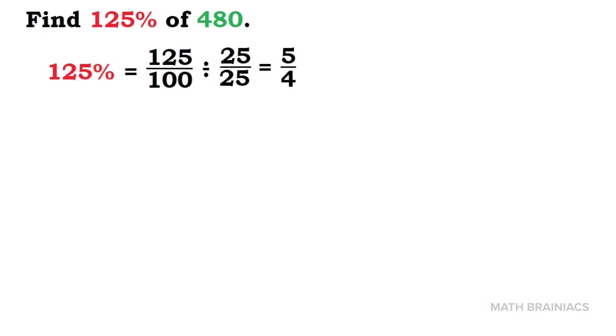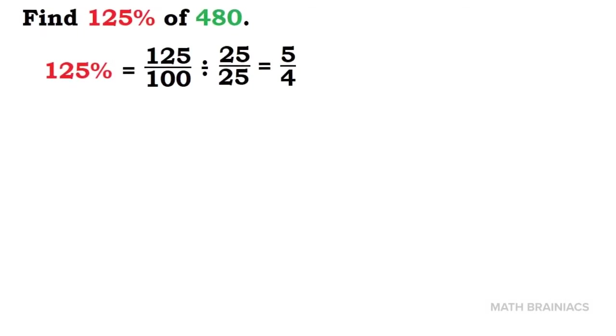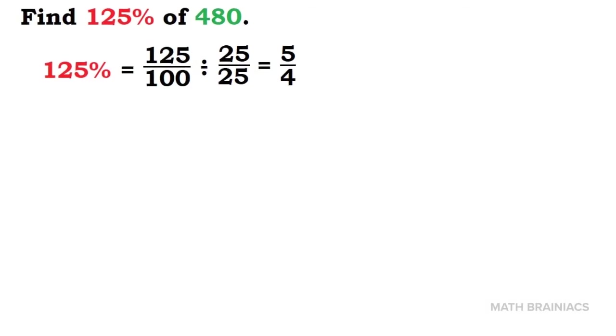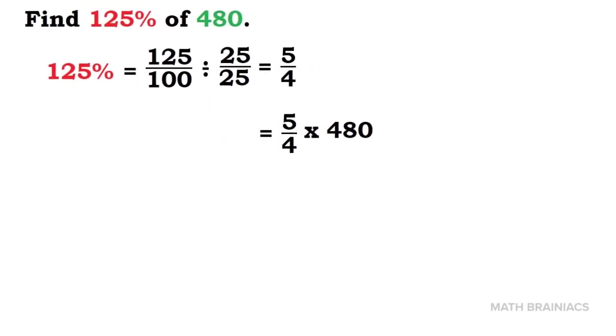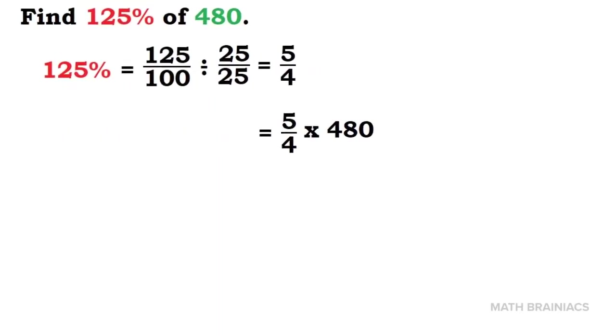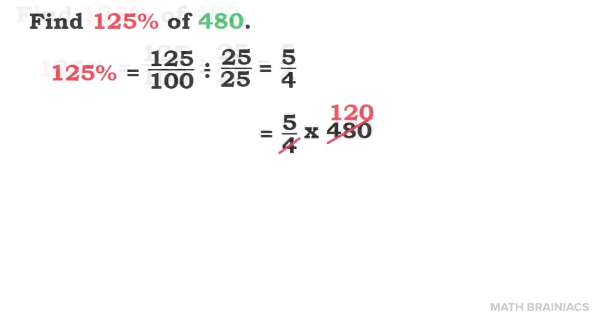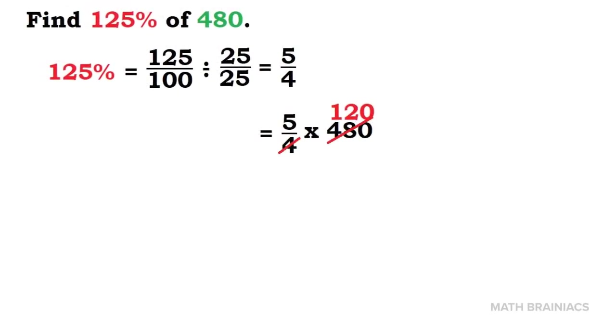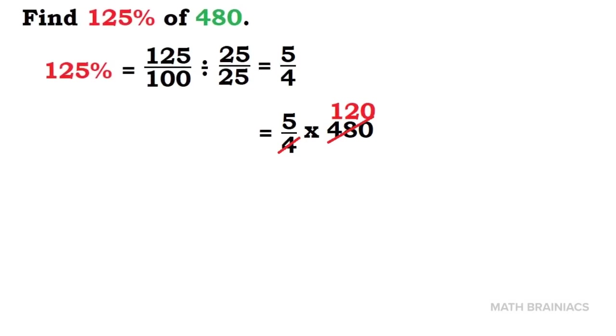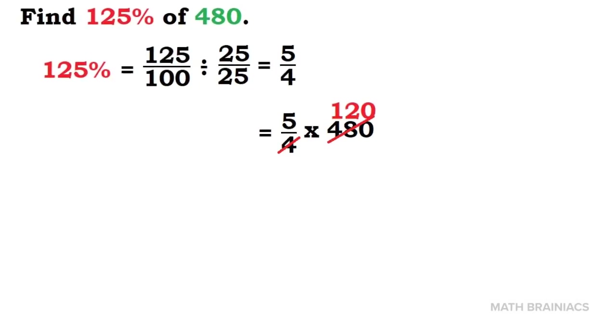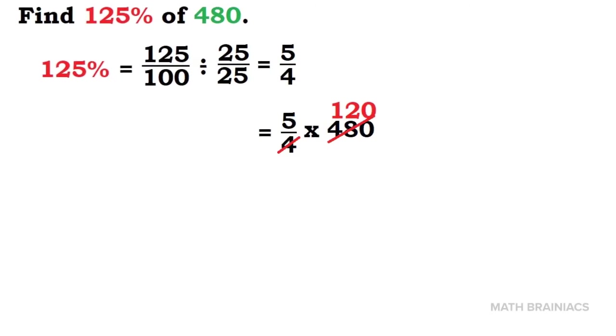Consequently, 125 divided by 25 is 5 and 100 divided by 25 is 4. Therefore, the simplest form of 125 over 100 is 5 over 4. We can now multiply 5 over 4 by 480. We can cancel out 4 and 480 by dividing them with their common factor. 4 in 4 is 1, and 4 in 480 is 120.